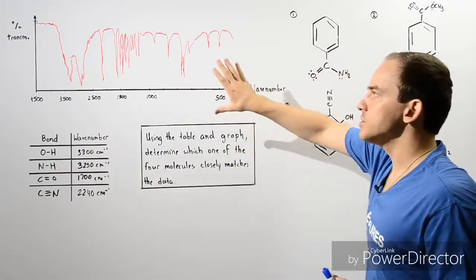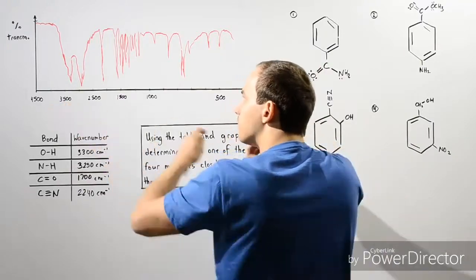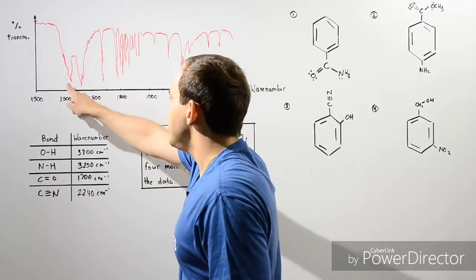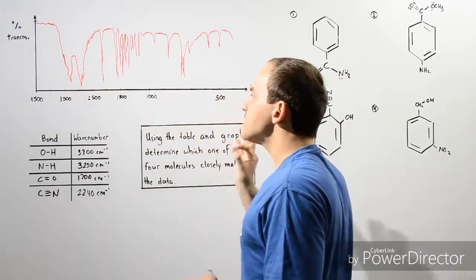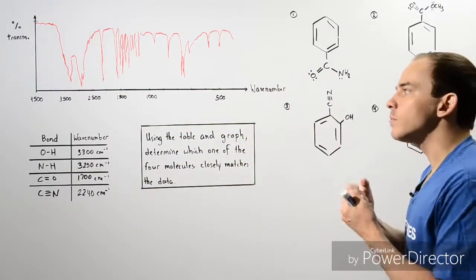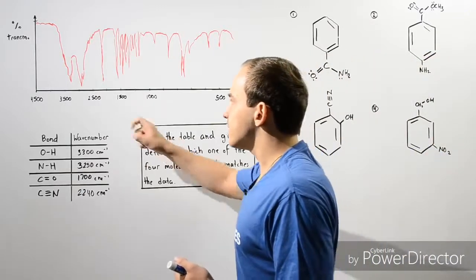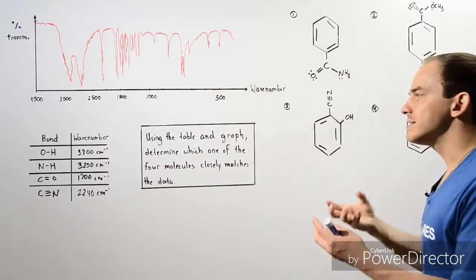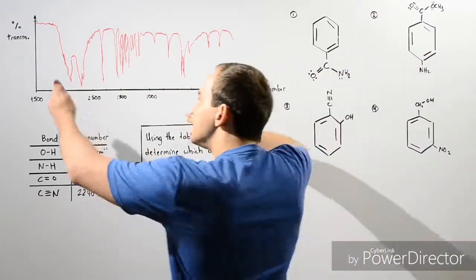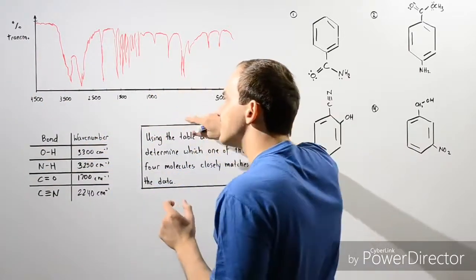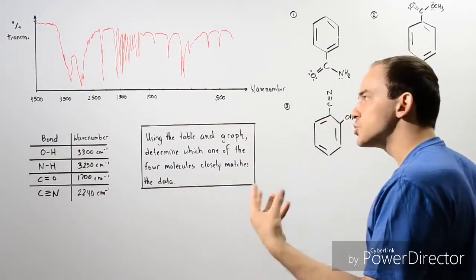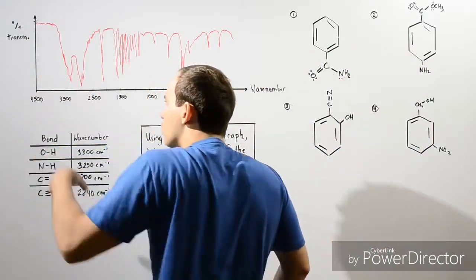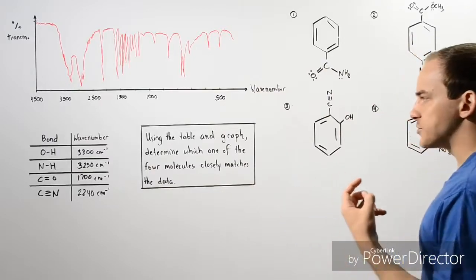According to this graph, the x-axis is the wave number and the y-axis is the percent transmittance. Each one of these dips corresponds to a chemical bond that absorbs that energy, and we can use these dips to determine the different types of chemical bonds in our molecule. The higher up we go along the y-axis, the less energy is absorbed and the more is transmitted. The lower we go, the more is absorbed and the less is transmitted.